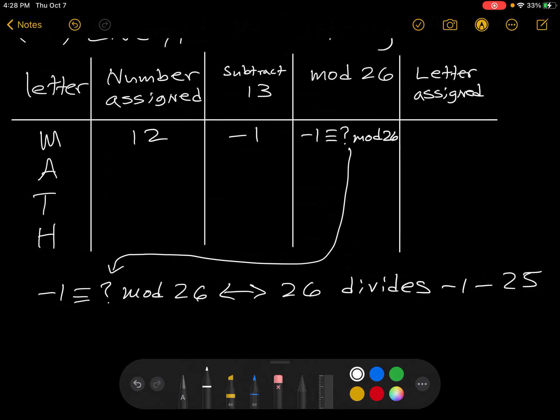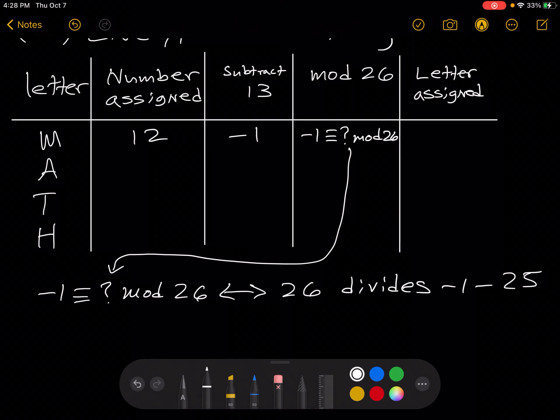And we can check this by taking this one step further if we wish. Remember what does it mean to say that 26 divides negative 1 minus 25? This is the same as saying that negative 1 minus 25, otherwise known as negative 26 over 26 equals some integer. Well that equals negative 1, which is an integer, so we know that it's correct to use question mark equals 25.